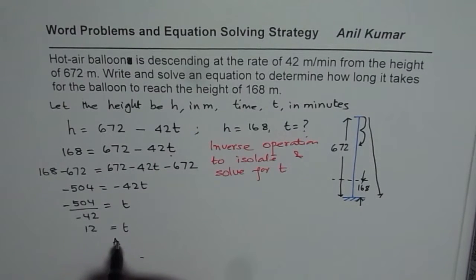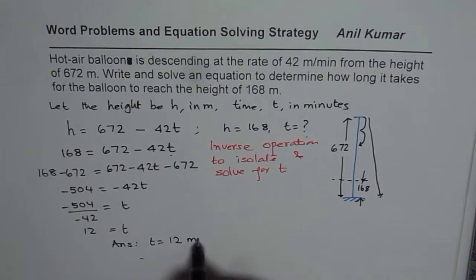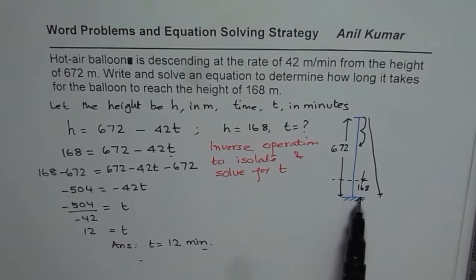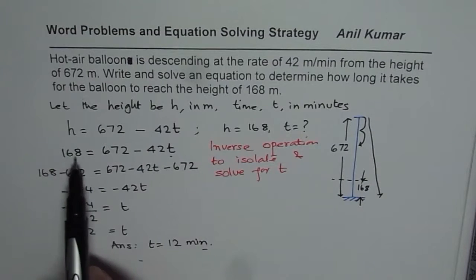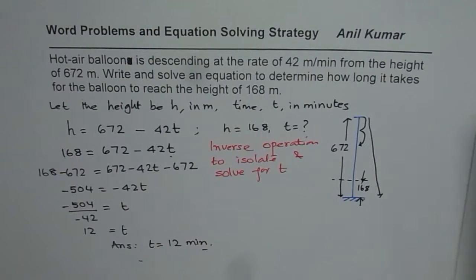So the answer is T equals 12 minutes. After 12 minutes, the height of the balloon will be 168 meters. That is how you solve the question. There are also alternate ways of solving such questions — you could do it by graph or by making a table of values.